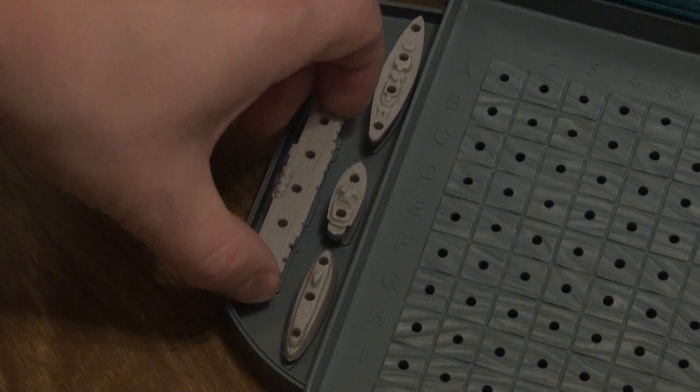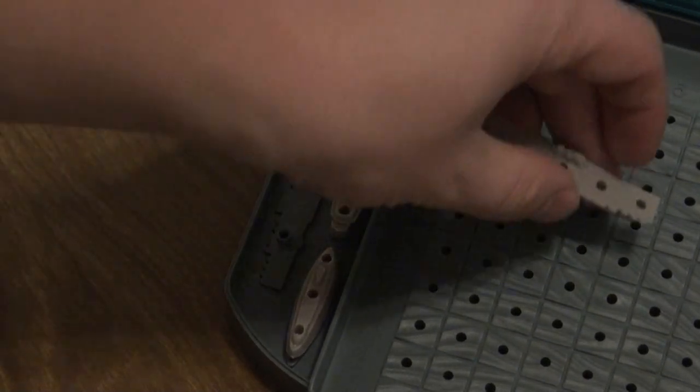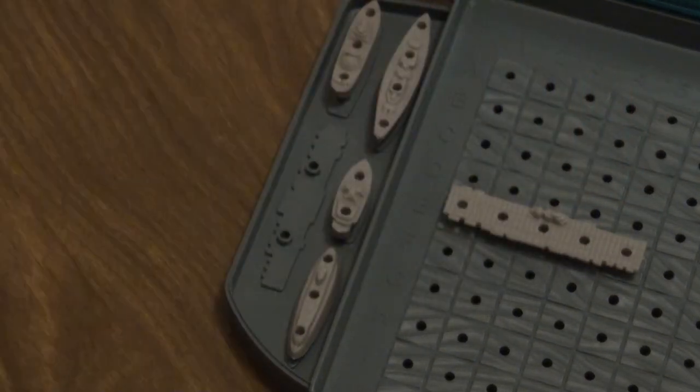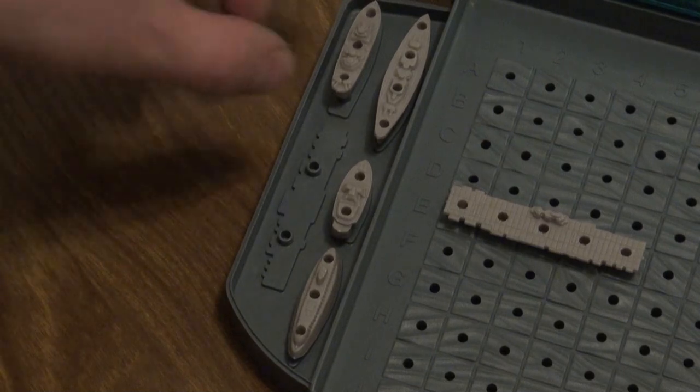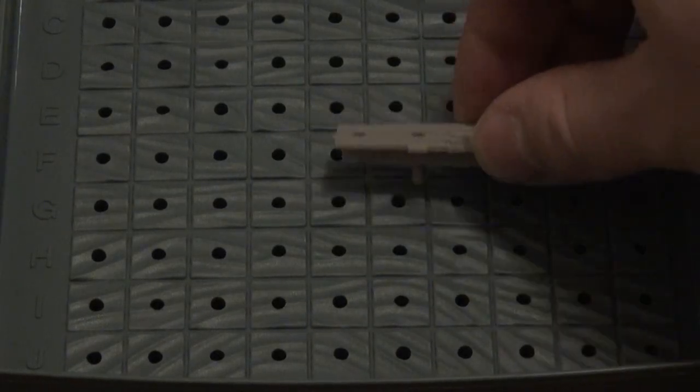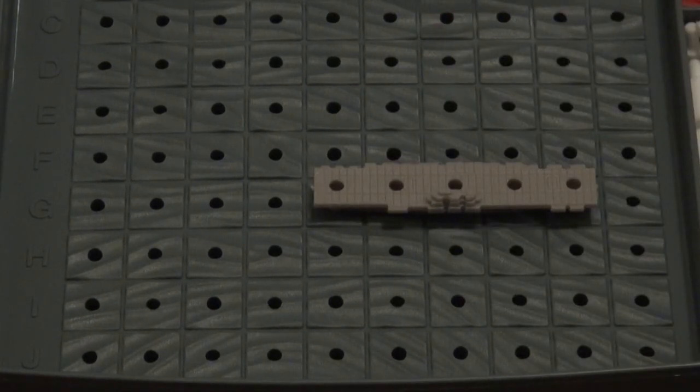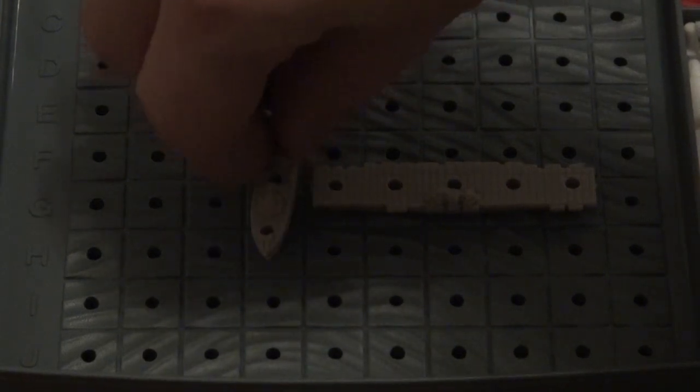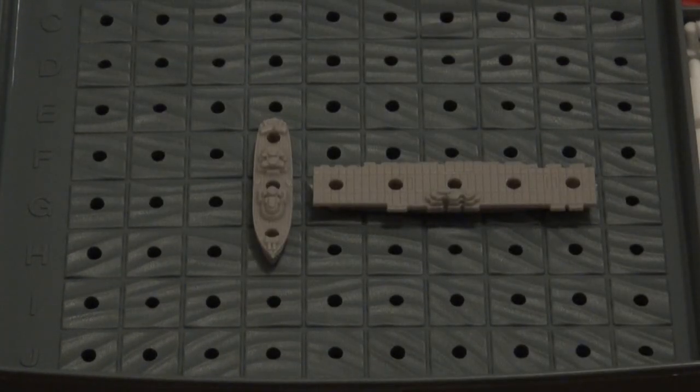Each player has five ships they must place on their grid, ranging from the lowly destroyer at a length of two to the mighty carrier at five. You can place your ships anywhere on the grid, as long as they are completely within the bounds of the letters and numbers. Keep in mind, once you've finished placing your ships, they cannot be moved for the rest of the game.